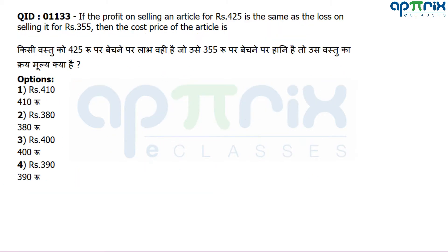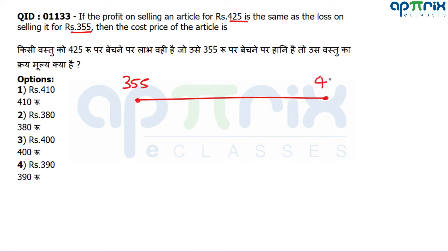Question number 33: If the profit on selling an article for rupees 425 is the same as the loss on selling it at rupees 355, find the cost price. Here two selling prices are given — 355 and 425. The loss at one equals the profit at the other. This is only possible when the cost price is the average of both selling prices. Add them and halve: (425+355)/2 = 390. That is the correct answer.